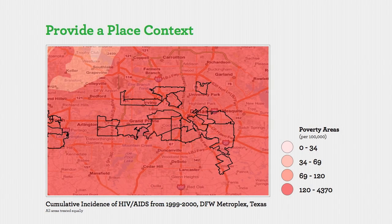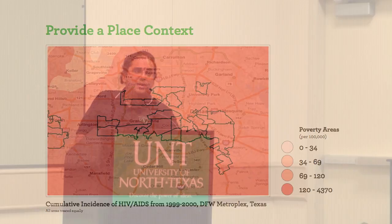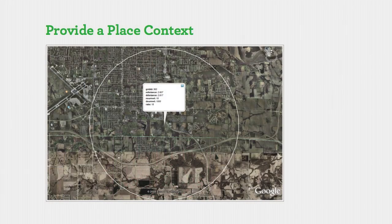These maps should further be embedded within place context. You need to know what the underlying place is about. Here's the HIV burden zoomed into the Dallas-Fort Worth Metroplex, where you can look at areas of low socioeconomic status. Here's Des Moines, Iowa, the region that had the highest infant mortality rate in the state — about 18 per thousand. You need to start thinking about what it is about the geography of that place that's resulting in those outcomes.